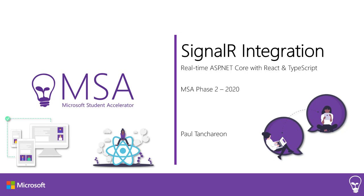Welcome back to MSA Phase 2 2020. I hope you guys have enjoyed everything you have learned so far in this project. In this section, we will be exploring the implementation of SignalR, an open-source library that adds real-time functionality to your web application. This section will assume that you have already completed the base project of the Pixel Canvas app, so be sure to check out the prior section before continuing.